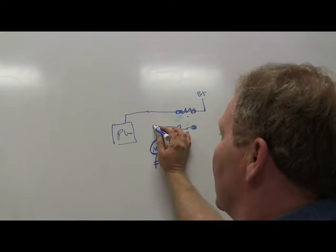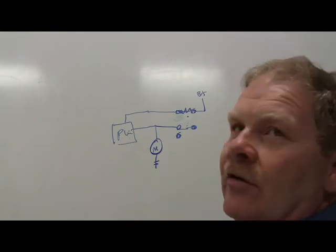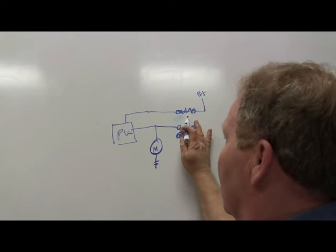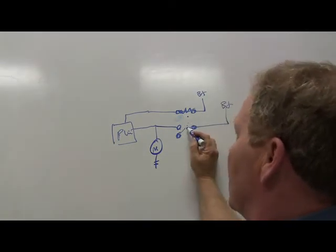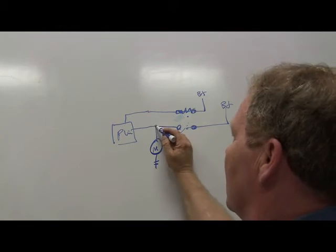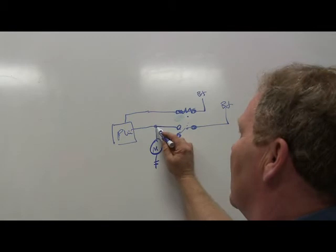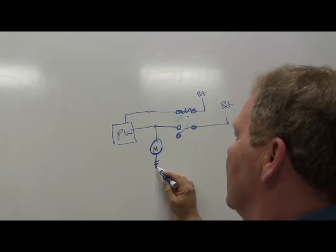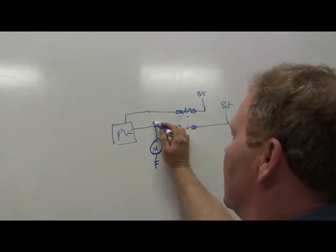Something they decided to do later was letting the PCM read the relay contact side — pin 8, for example. When the relay is open, you're reading a ground. When the relay closes, that ground should go away and you should read 12 volts there.